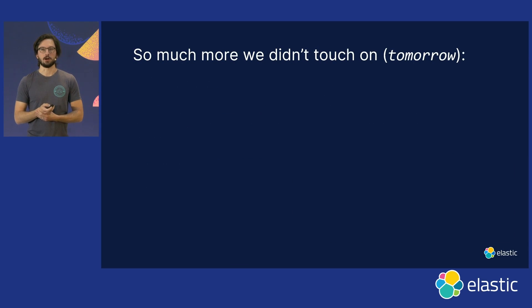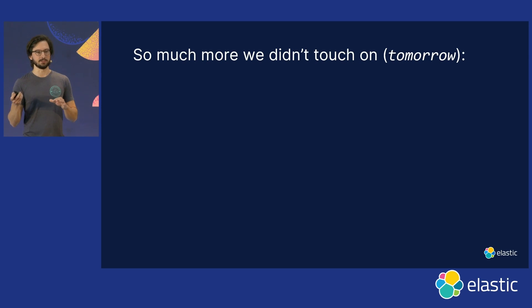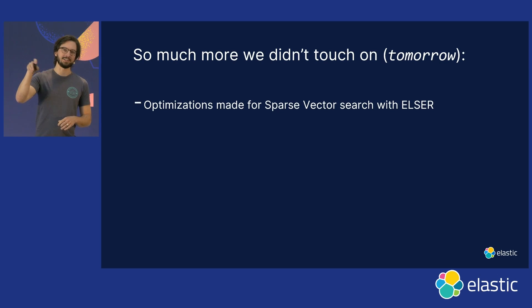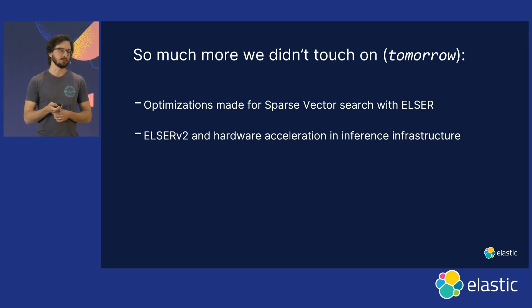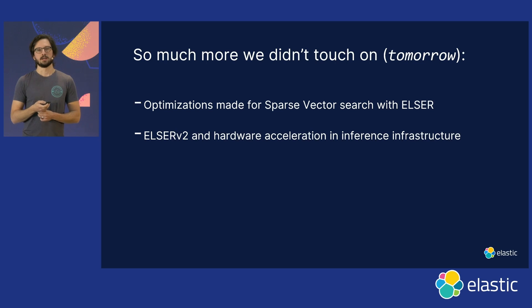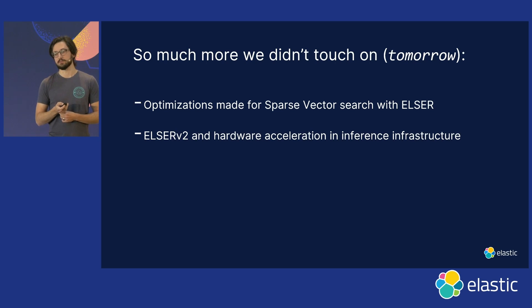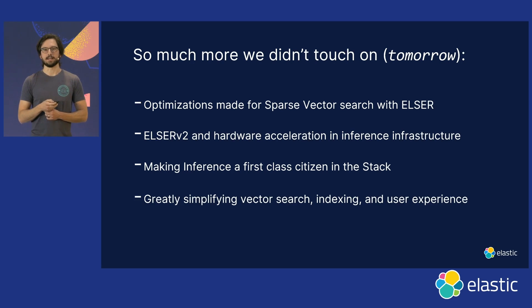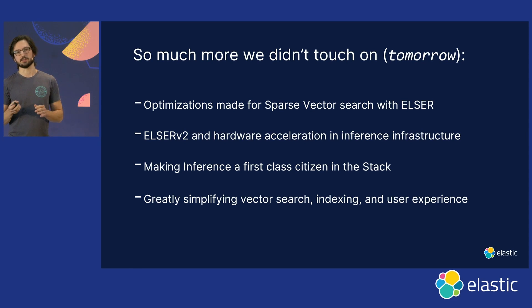Running out of time — here's a quick overview of additional items: optimizations for sparse vector and ELSER with multiple improvements in Lucene coming to Elasticsearch soon; ELSER v2 and hardware acceleration of inference infrastructure; making inference a first-class citizen in the stack; and many simplifications inside vector search, indexing, and user experience. I hope this high-level overview created some questions and I'm eager to talk to each one of you. Thank you.